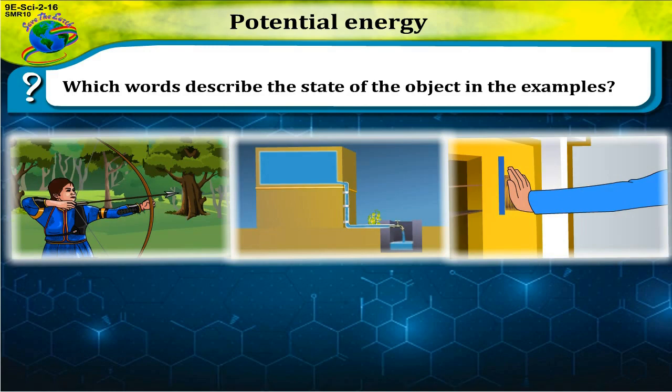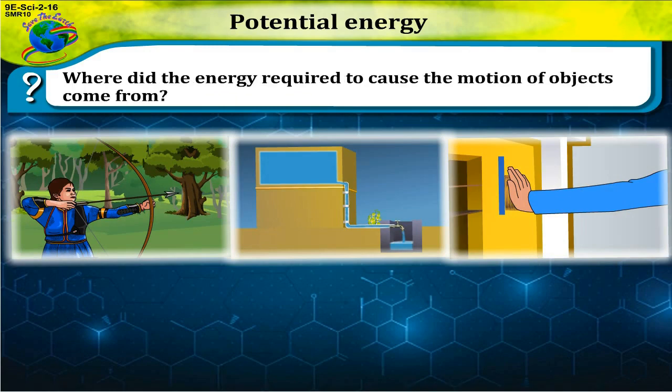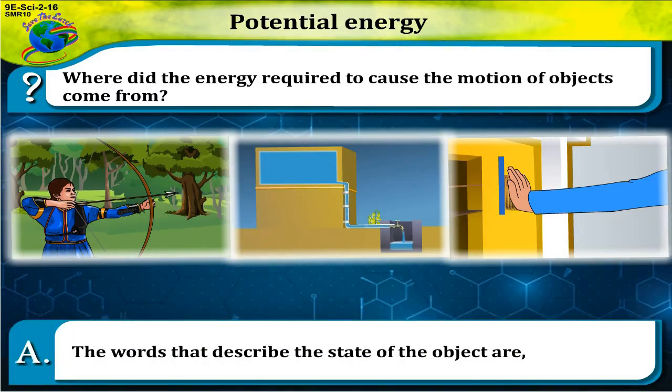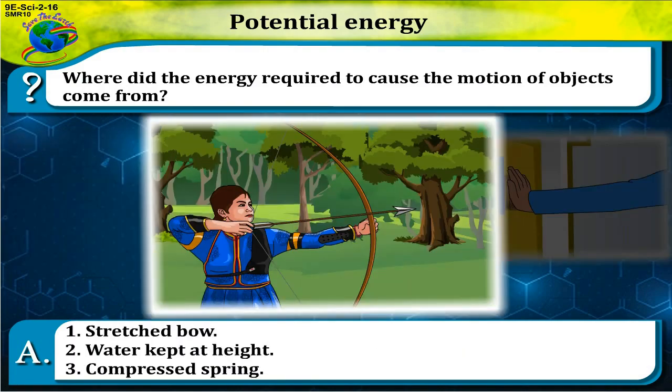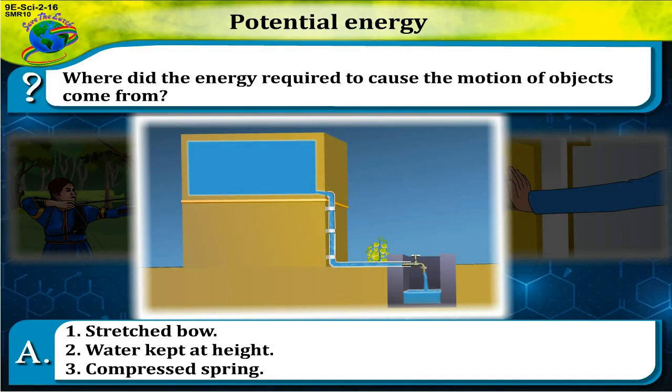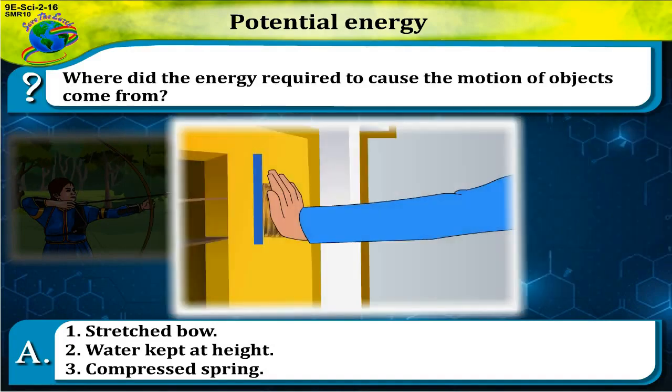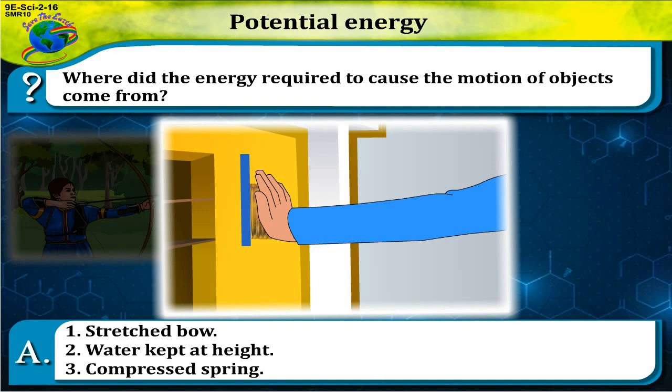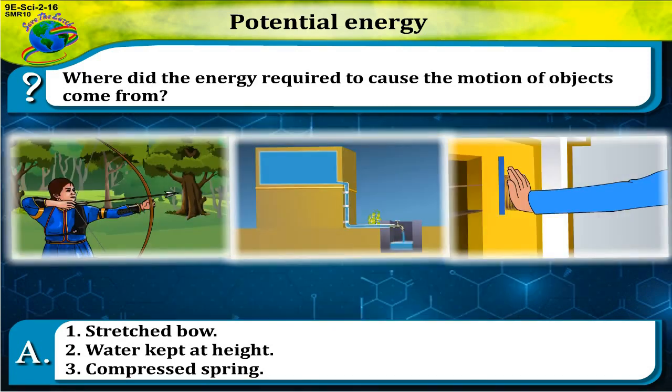Where did the energy required to cause the motion of objects come from? The words that describe the state of the object are: stretched bow, water kept at height, and compressed spring.